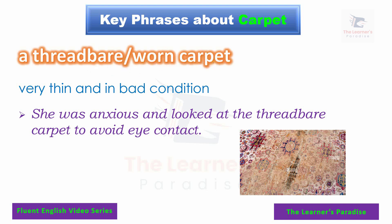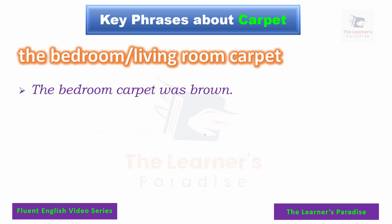Next, we have a threadbare or worn carpet — a carpet that is very thin and in very bad condition. It is very worn out, very old, and not attractive to your eyes. Example sentence: she was anxious and looked at the threadbare carpet to avoid eye contact.